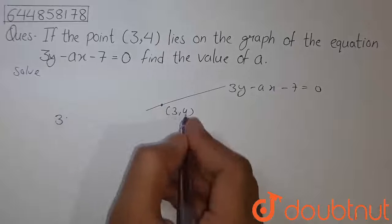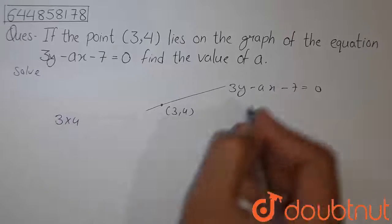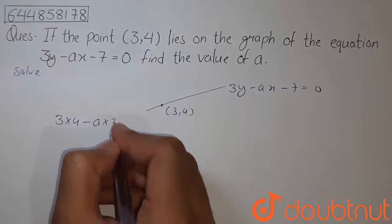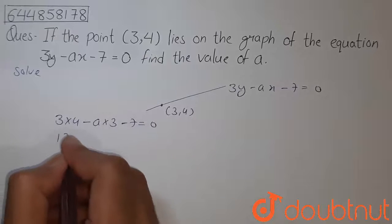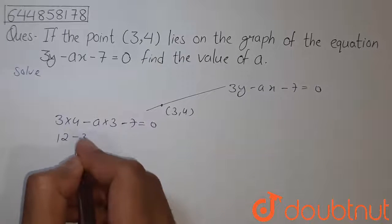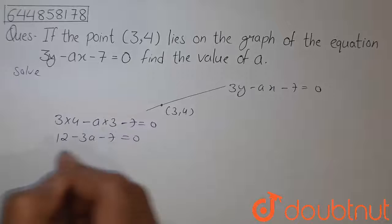In the place of y, that is 4, and minus a into x, that is 3, and minus 7 equals 0. So 3 into 4 will be 12, minus 3a, minus 7 equals 0.